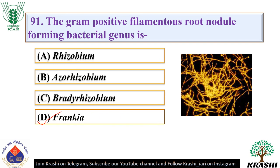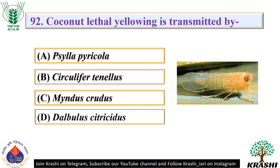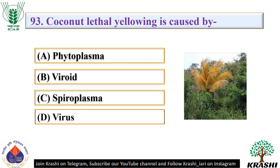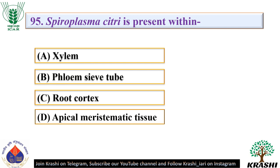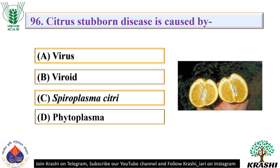Question number 92: Coconut lethal yellowing is transmitted by — it is transmitted by Myndus crudus, that is a plant hopper. Question number 93: Coconut lethal yellowing is caused by — it is caused by phytoplasma. Question number 94: Citrus stubborn disease is transmitted naturally by Circulifer tenellus — it is a leaf hopper. Question number 95: Spiroplasma citri is present within — it is present within phloem sieve tube. Question number 96: Citrus stubborn disease is caused by Spiroplasma citri.